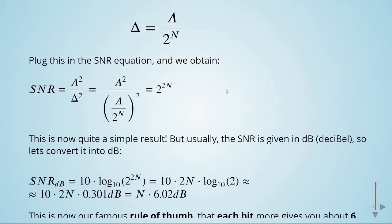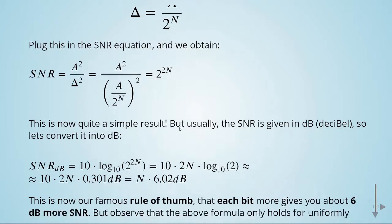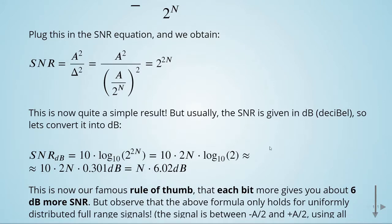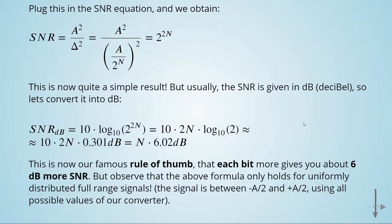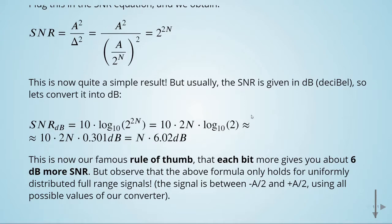Usually we express the signal-to-noise ratio in decibels. Converting, we find that the SNR for uniformly distributed signals equals n times 6.02 dB, where n is the number of bits. This is the famous rule of thumb that each additional bit gives you 6 dB more in signal-to-noise ratio. It's important to keep in mind that this formula only holds for uniformly distributed, full-range signals.